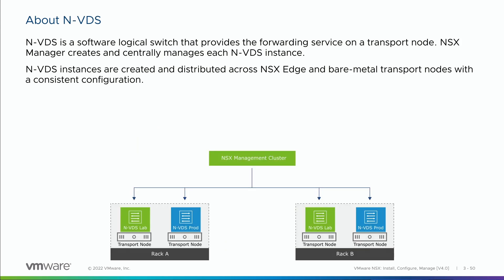The NVDS — NSX virtual distributed switch — is a host switch construct used on bare metal servers and NSX edge transport nodes, simply because there's no vSphere distributed switch on those platforms. We need some kind of virtual switch to provide packet processing, so the NVDS is what we use on non-vSphere platforms. It's all configured as part of NSX; we don't have to manage those individual virtual switches separately.